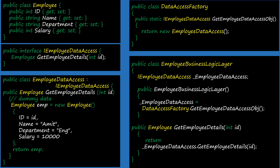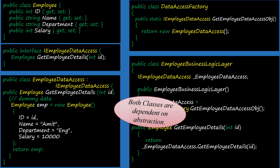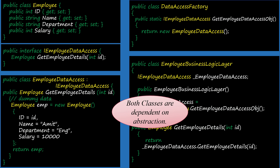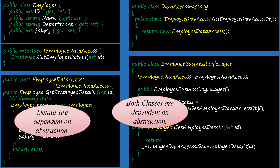To recap the definition: both the high-level module EmployeeBusinessLogicLayer and the low-level module EmployeeDataAccess should depend on abstraction. Here, both are dependent on IEmployeeDataAccess, which is the abstraction. Another condition was that details are dependent on abstraction — and since we implemented the abstraction as an interface, our class is forced to implement those methods, so our details are dependent on abstraction. We have successfully implemented the Dependency Inversion Principle. If you have any query, you can ask me in the comments.